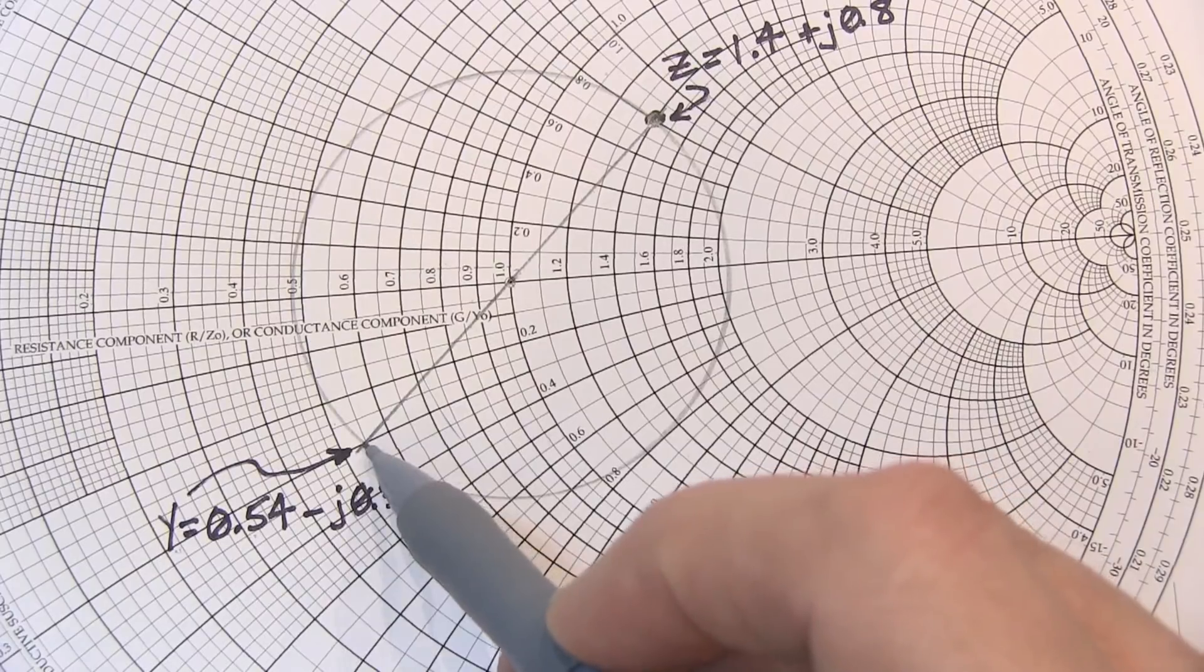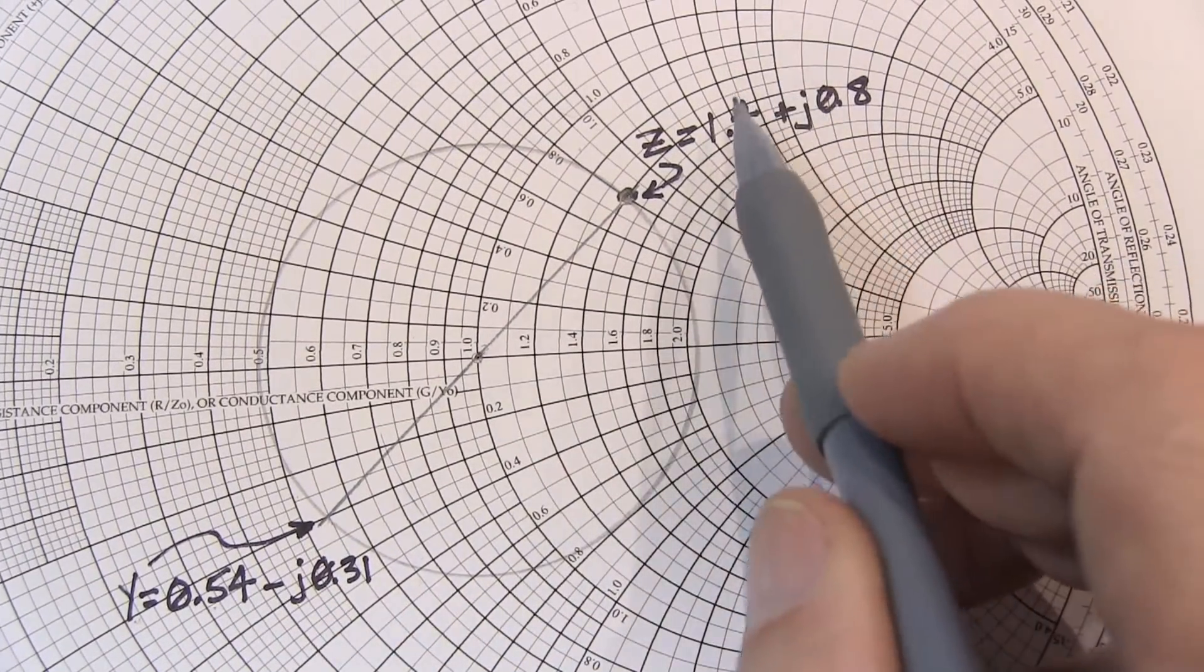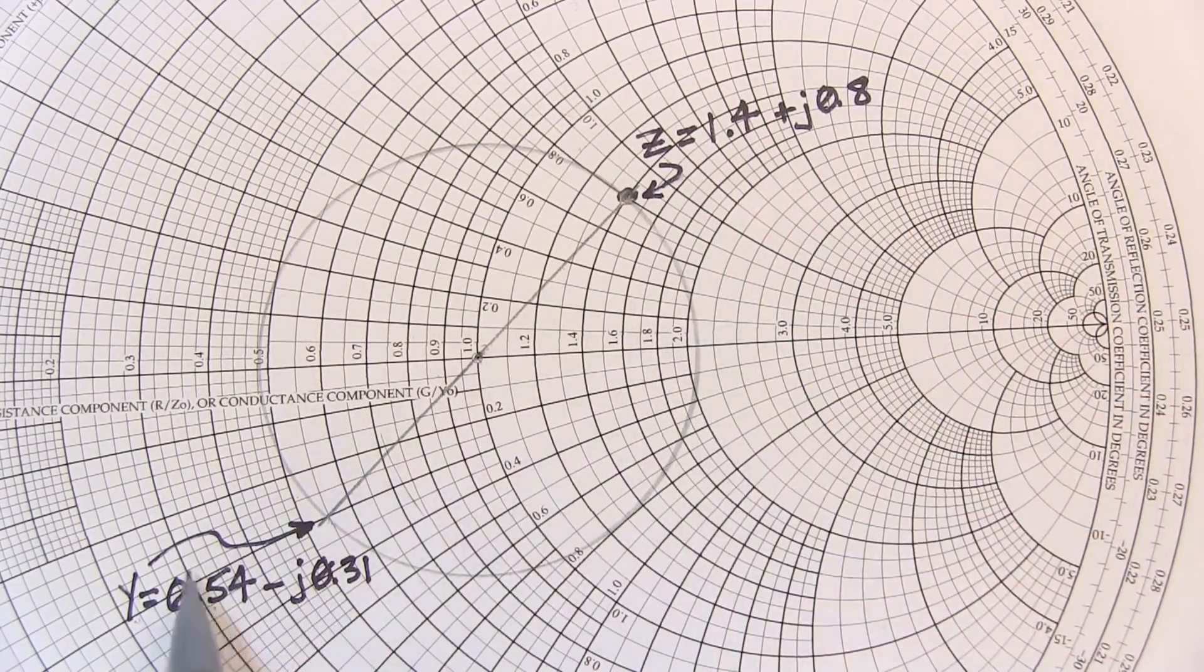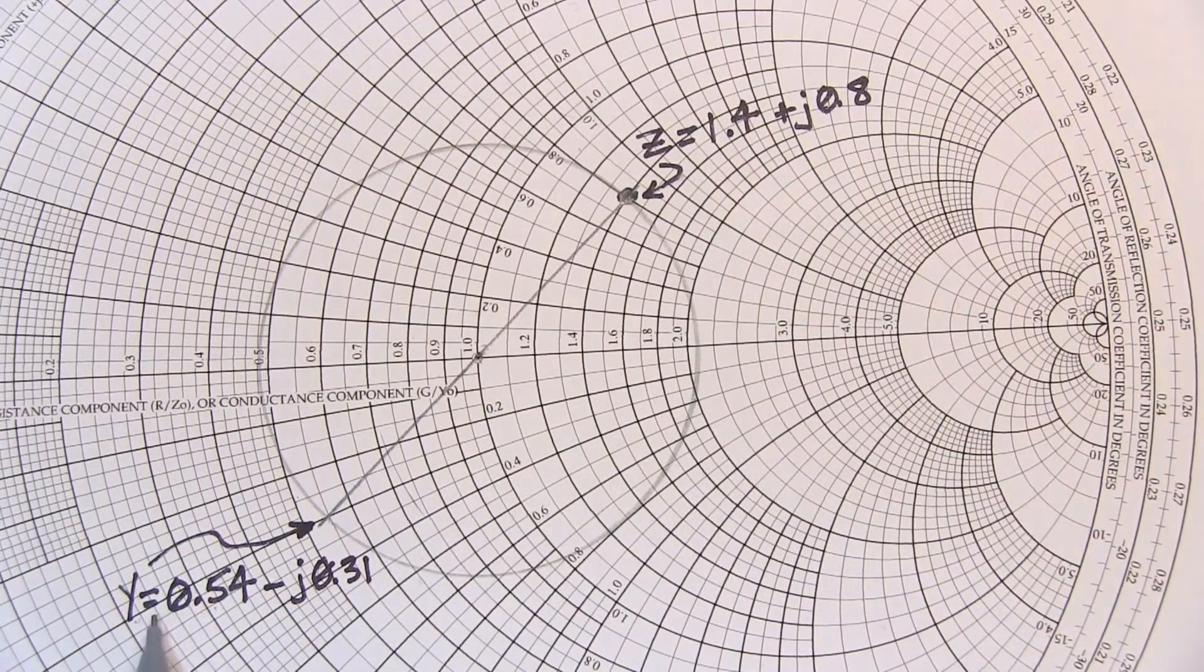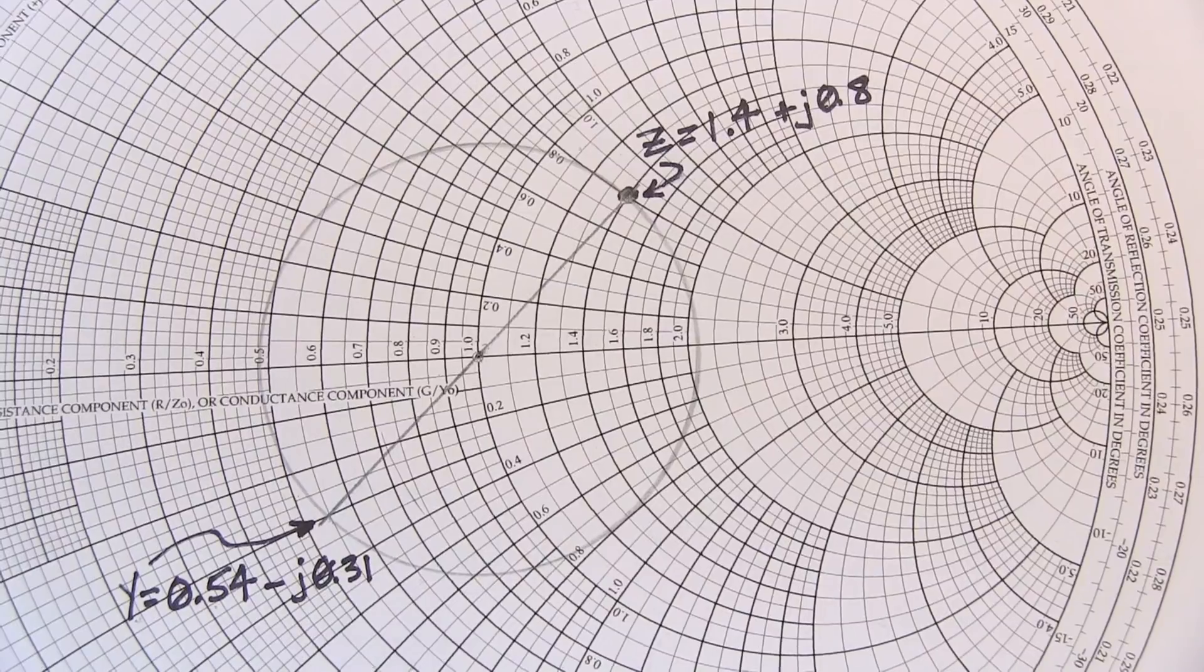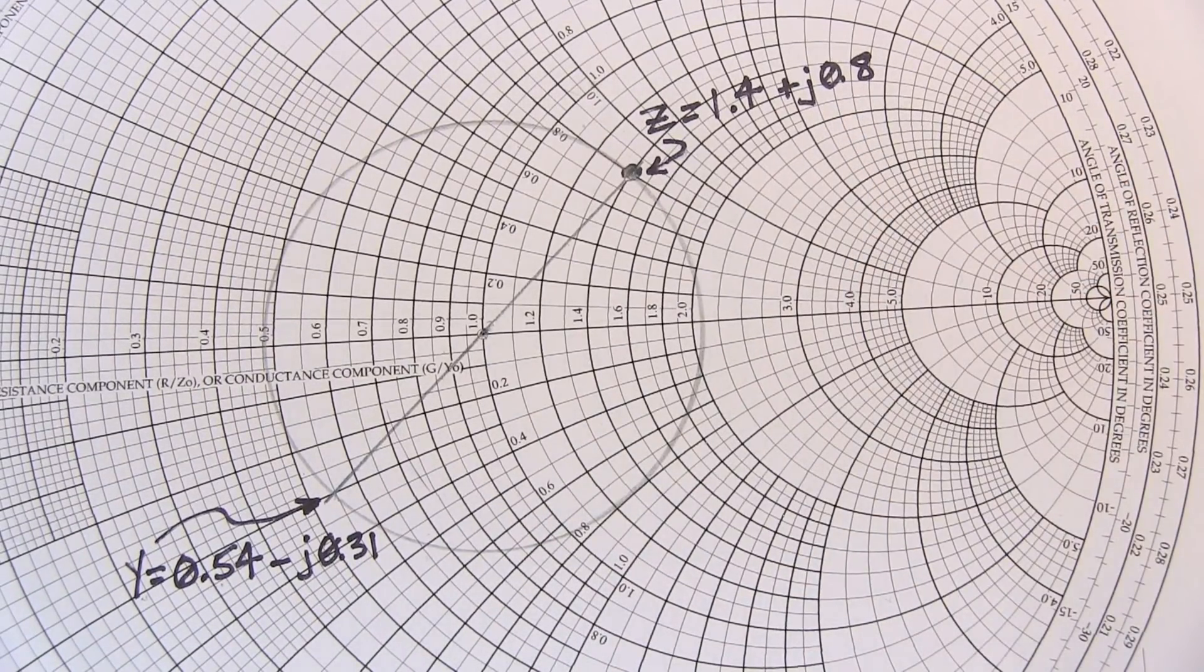And when we cross on the other side, that becomes our admittance component. So the conversion from an impedance of 1.4 plus j0.8 to admittance is 0.54 minus j0.31. Very simple, no math. Really easy to convert between impedance and admittance on the Smith chart.